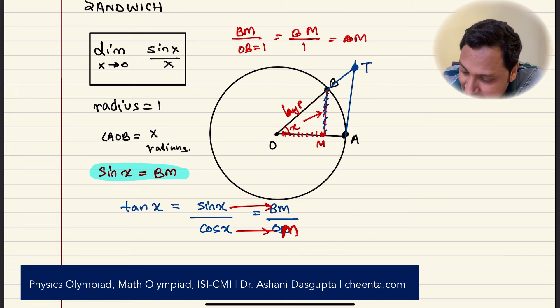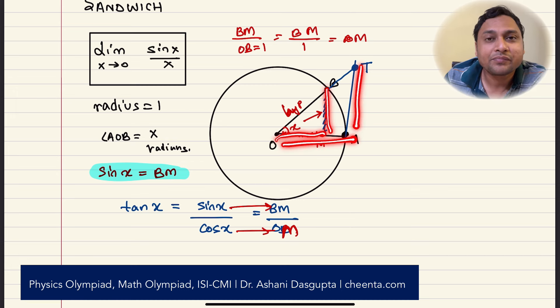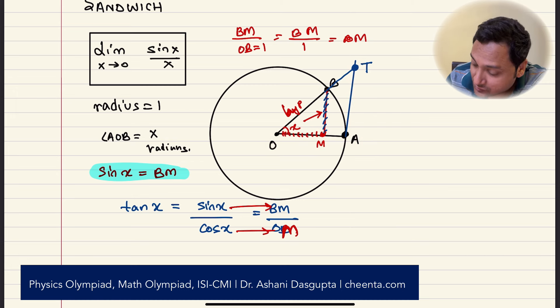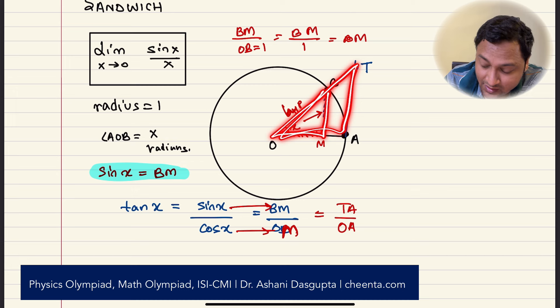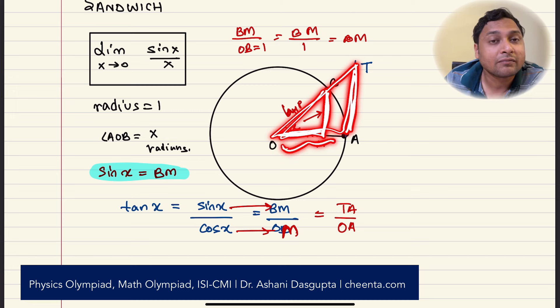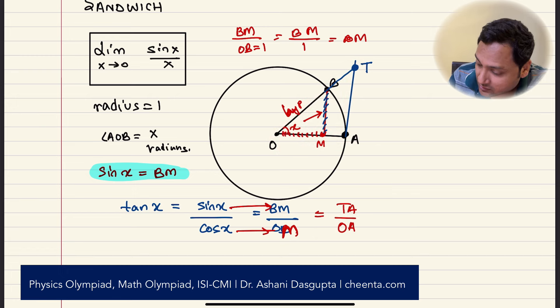But notice that BM over OM is TA over OA. Isn't it? It's TA over OA. This is equal to TA over OA. Why? Because these two triangles are similar. This triangle and this triangle. So BM over OM is equal to TA over OA. Right? But OA is equal to 1.